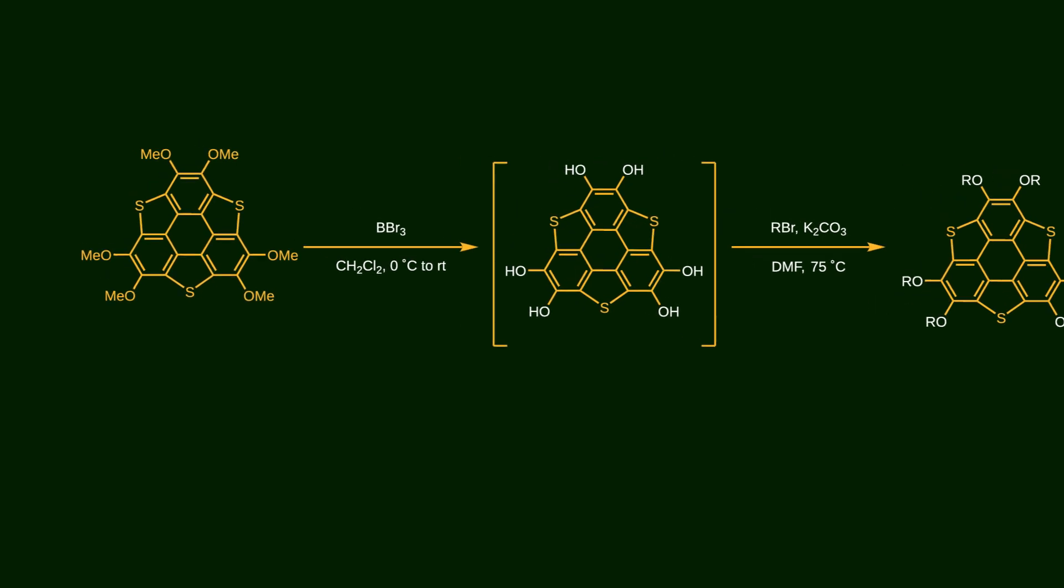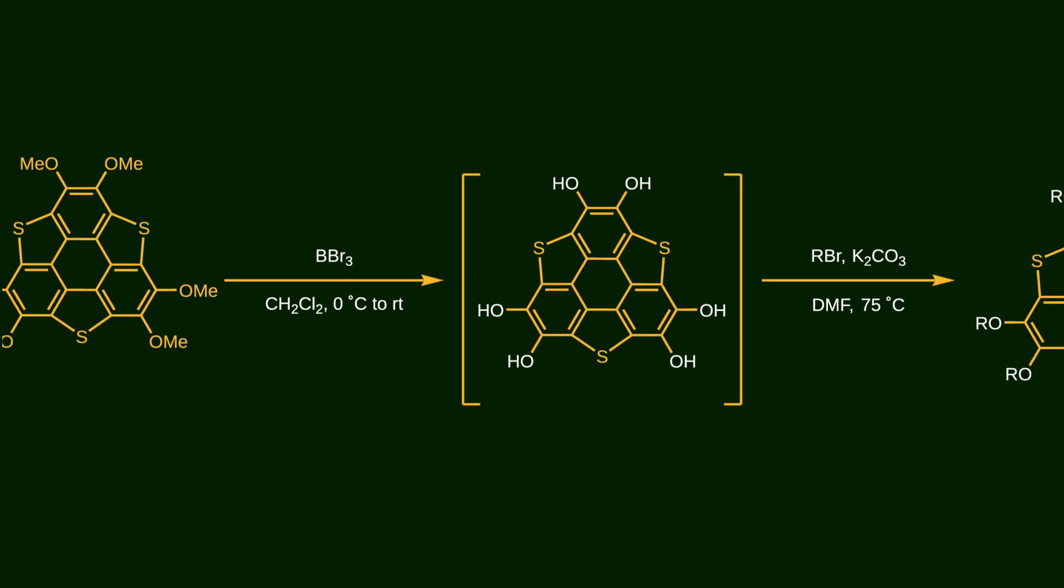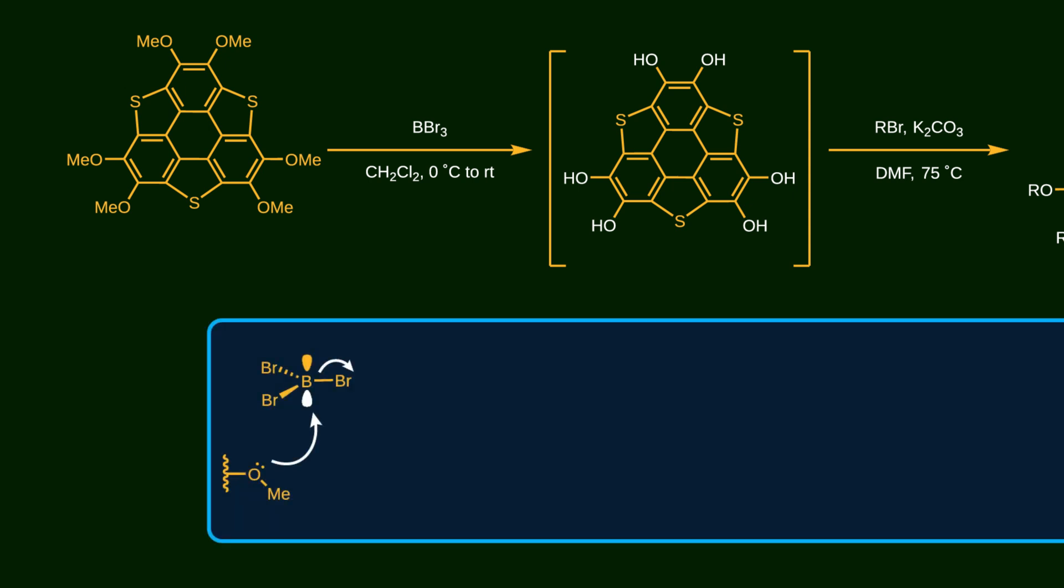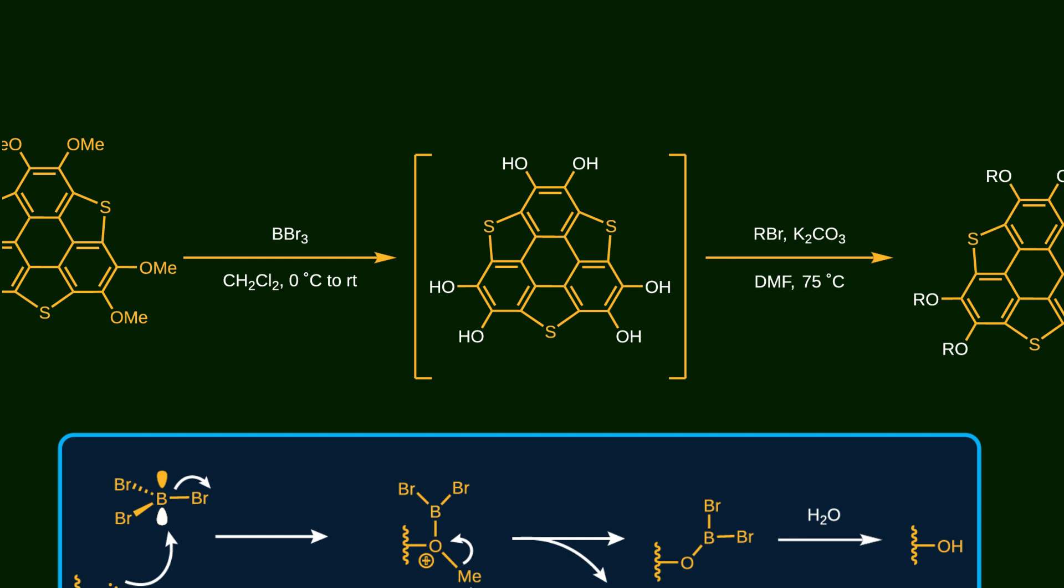But this is not the end. The point is that substitutions play a crucial role in bowl-to-bowl inversion. So it's important to install different substitutions on the main skeleton to investigate how they affect the inversion process. To do this, we first need to convert the methoxy groups to alcohols. For demethylation, this intermediate reacts with boron tribromide. First, the methoxy group attacks the empty orbital of the boron atom, and one of the bromine atoms leaves as a bromide ion which is a good nucleophile. The bromide ion then attacks the methyl group, and the bonding electrons move to the positively charged oxygen. As a result, bromomethane leaves the molecule and the new oxygen-boron bond is formed. After addition of water, the air-sensitive hexahydroxy intermediate is obtained.